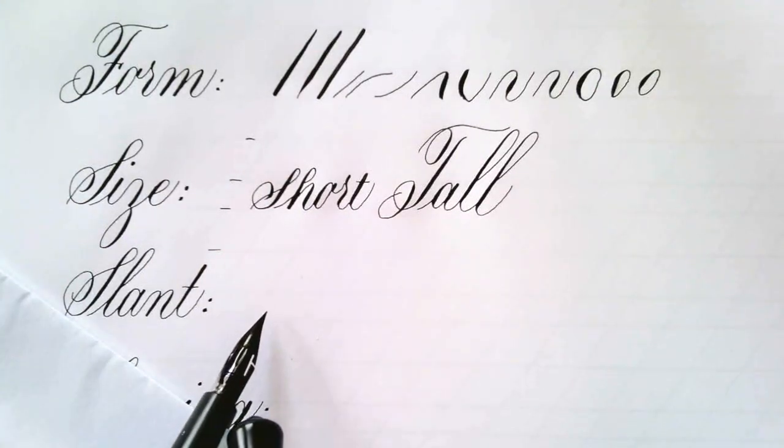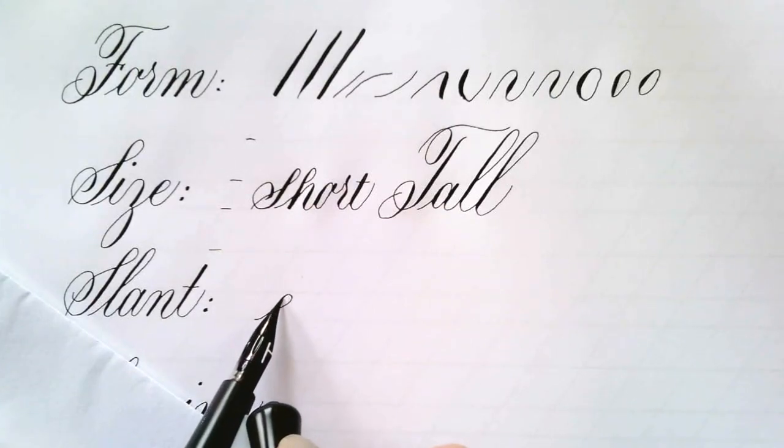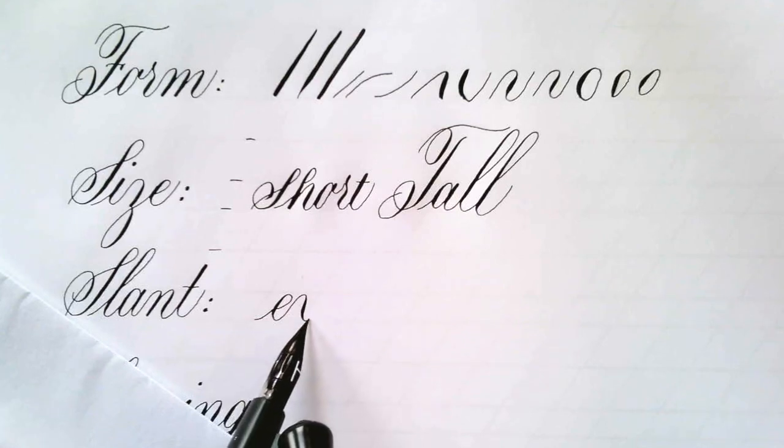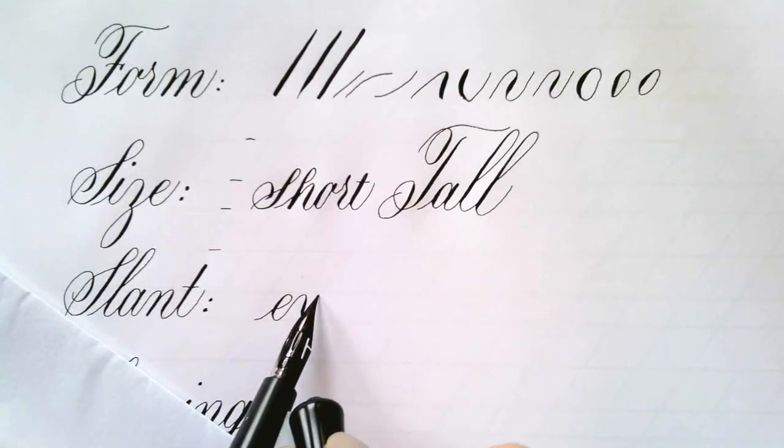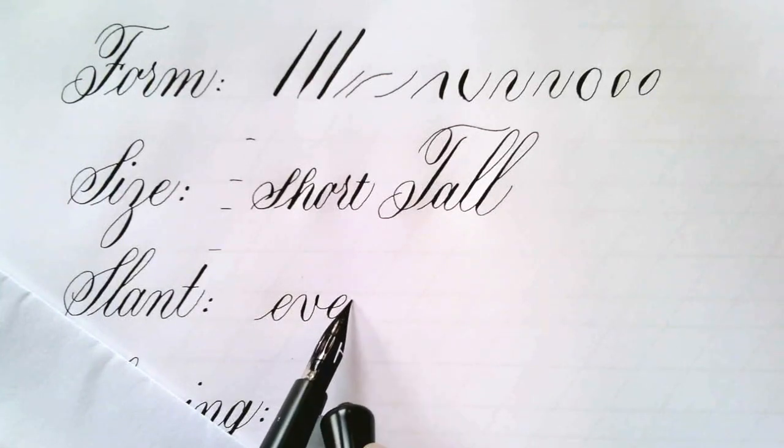The slant—I've mentioned the 55 degree angle I don't know how many times, so we have to make sure that we follow it. This word I'm writing here, even—if it's not even, then it's going to mess with our form, it's going to mess with the spacing.